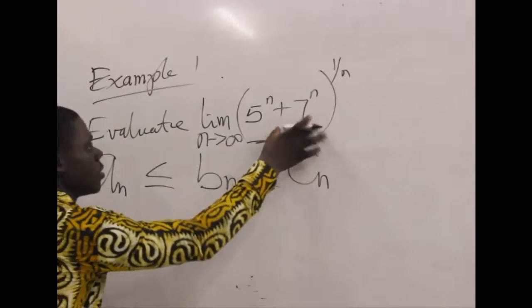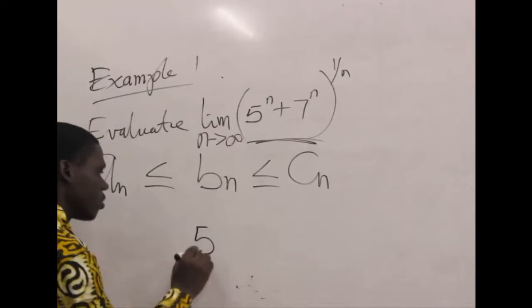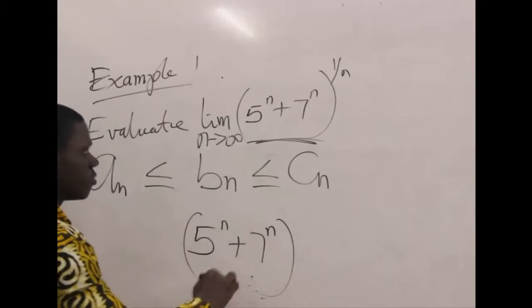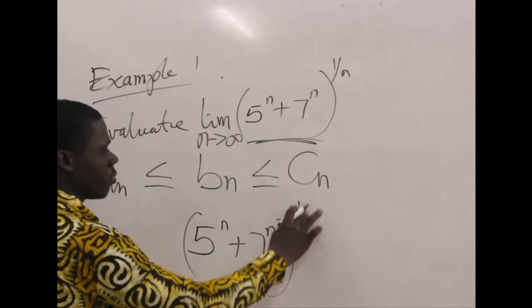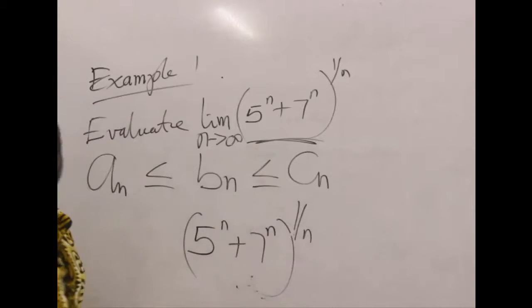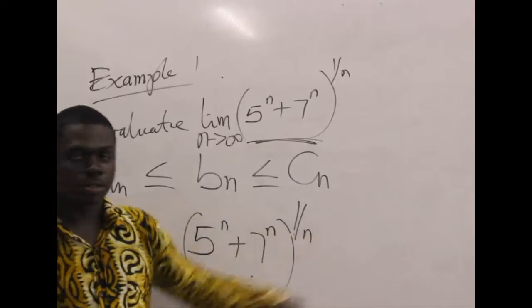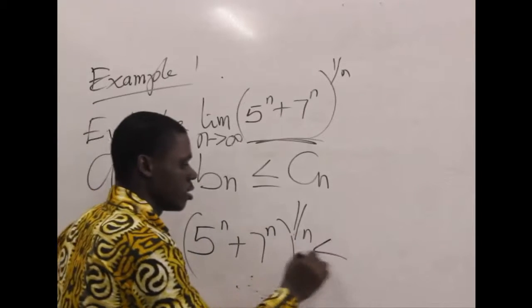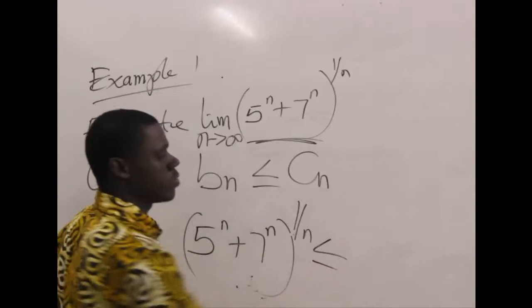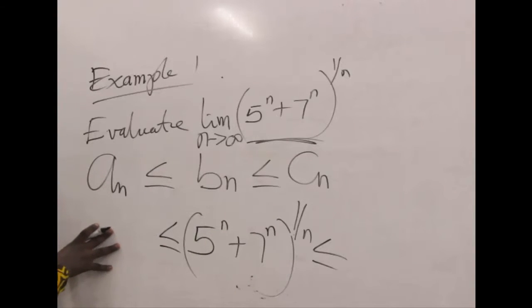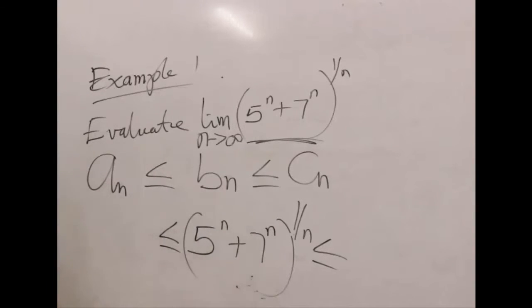So let's keep this and work with it. The sequence we are proving should be in the middle — we cannot determine its limit directly, so we put it there. Now we surround it with another sequence on each side: one which is less than or equal to our sequence, and one which is greater than or equal to it.